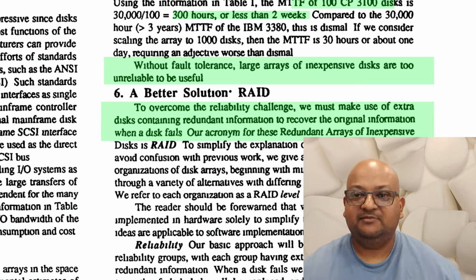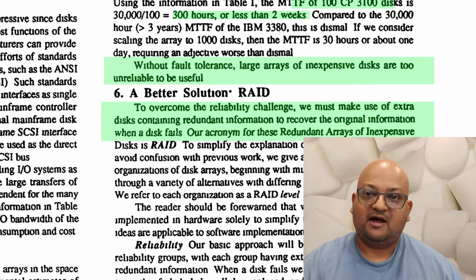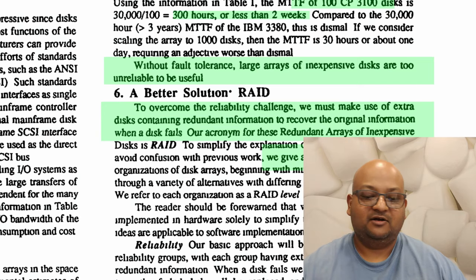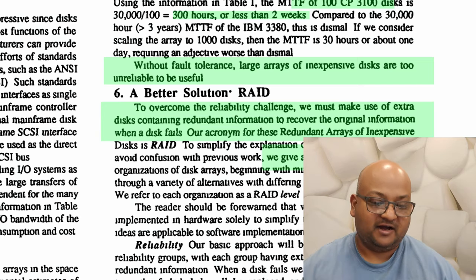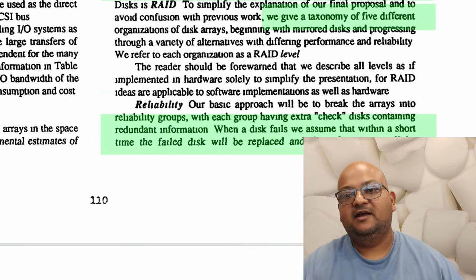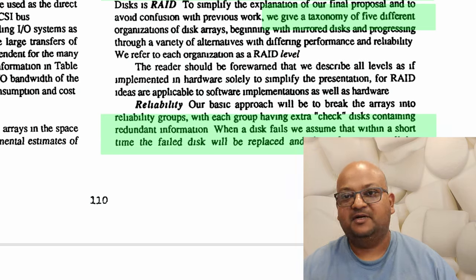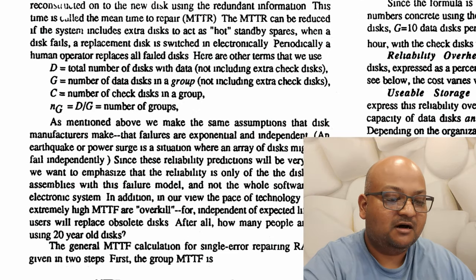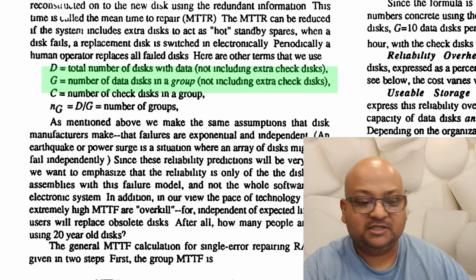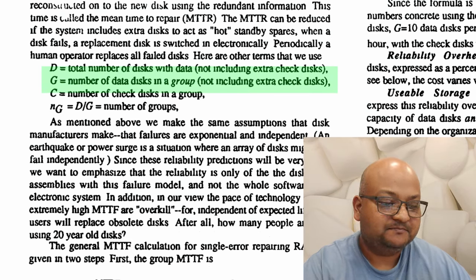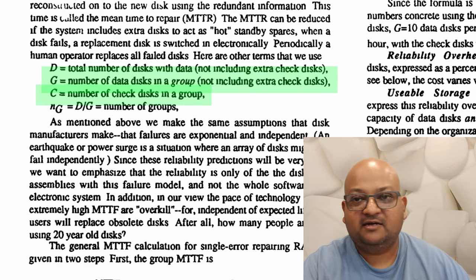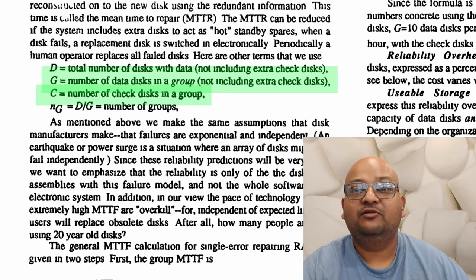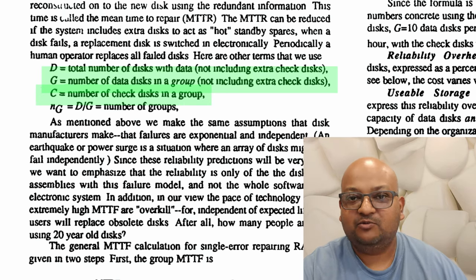All the different RAID schemes are essentially different ways to spread out this redundant information across the array. The authors propose five different schemes and they call these RAID level 1 to RAID level 5. The assumption is that when one of the disks fails, it will be replaced with a functioning disk within a very short time — that's referred to as the mean time to repair, or MTTR. The disks are organized into groups, and each group has a number of data disks in it and also a number of what they call check disks. These are the disks that store either redundant information or some sort of coding information that you can use to retrieve data when one of the disks fails.